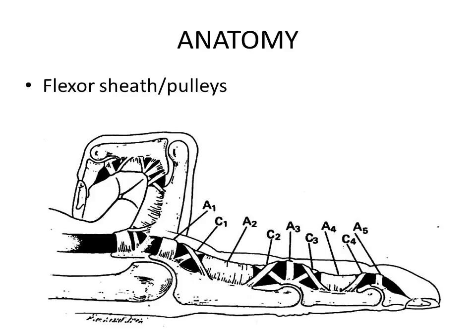To overcome this, there are special structures called the pulley system — rigid structures that are circular in nature and hold the tendon to the bone. They are divided into annular pulleys and cruciform pulleys. There are five annular pulleys, A1 to A5, and between them are the cruciform pulleys, which are cross-shaped and allow for movement at the joint level.